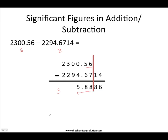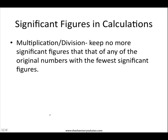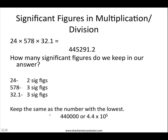That covers adding and subtracting, but what if we multiply or divide? The rule for multiplication and division is that we need to keep no more significant figures than that of any of the original numbers with the fewest significant figures. If we are multiplying 24 times 578 times 32.1, we see that 24 has two significant figures, 578 has three, and 32.1 also has three. Because 24 only has two significant figures, we can only keep two significant figures in our answer. Although your calculator gives 445,291.2, we can only keep two significant figures, and it is probably best to write your answer in scientific notation.